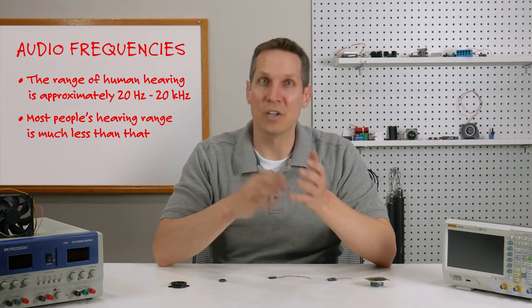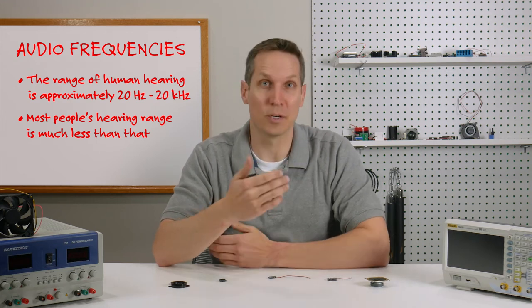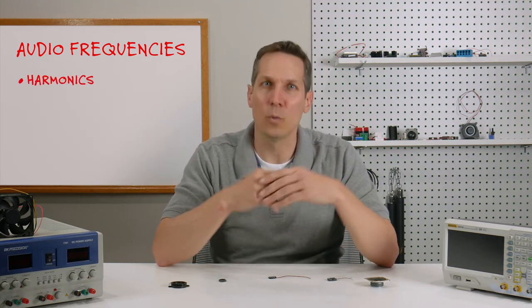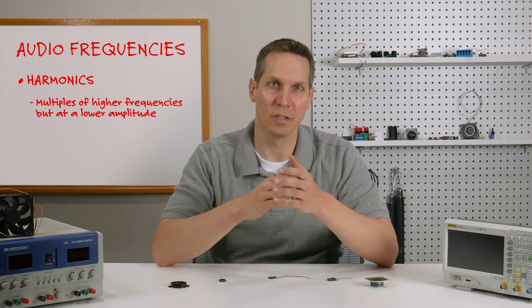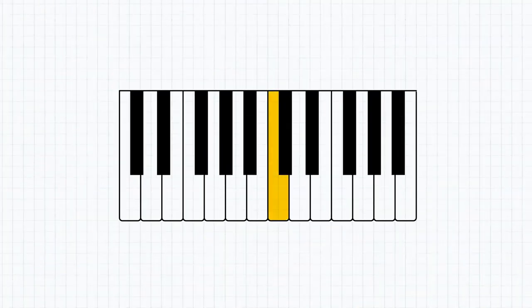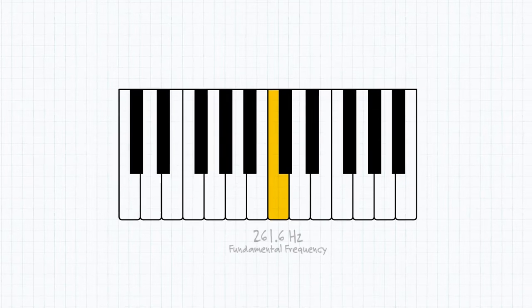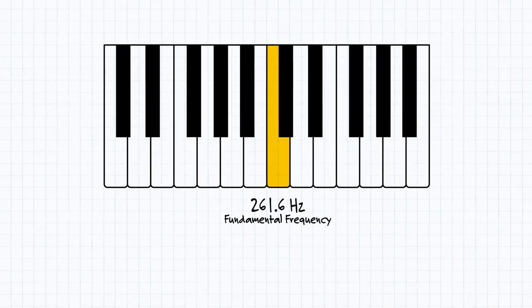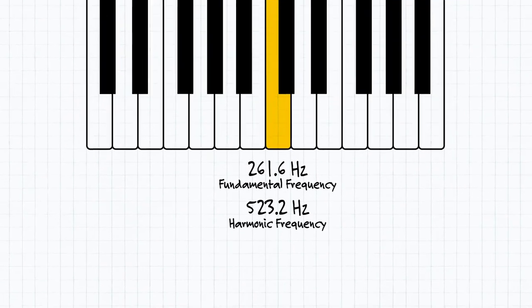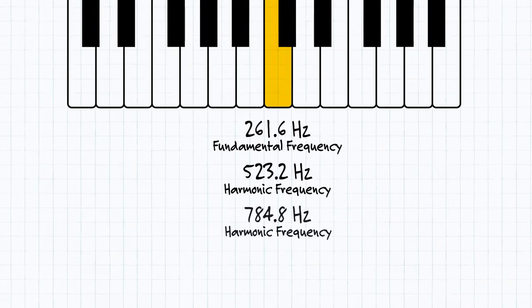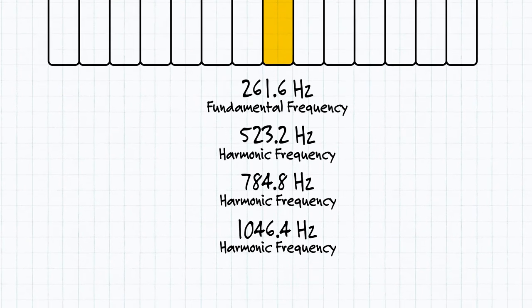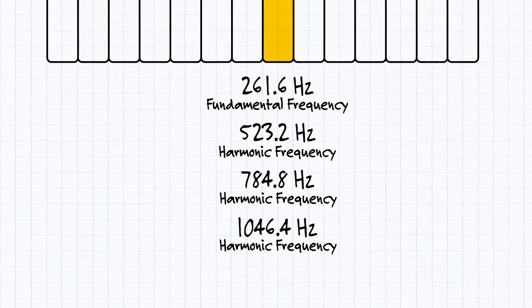While we're accustomed to talking about the fundamental frequency that a person or instrument creates, nearly all sound sources also create harmonics, which are multiples of higher frequencies but at a lower amplitude. For example, a middle C on the piano has a fundamental frequency of approximately 261.6 Hz, but it also produces quieter frequencies at 523.2 Hz, 784.8 Hz, and so on, generally getting quieter the higher you go in frequency.